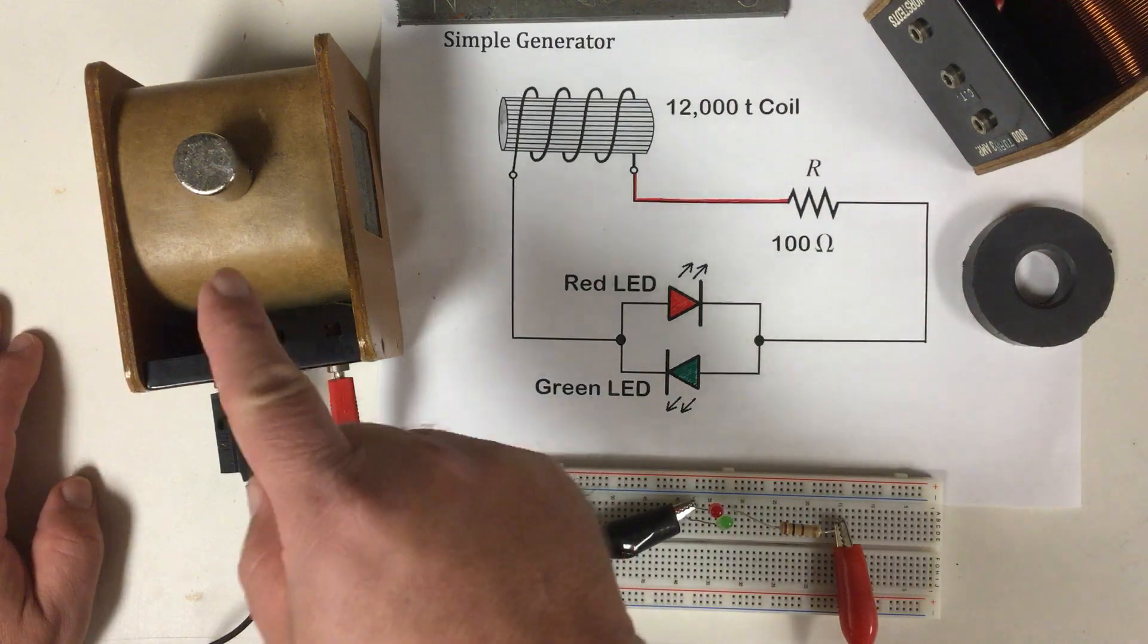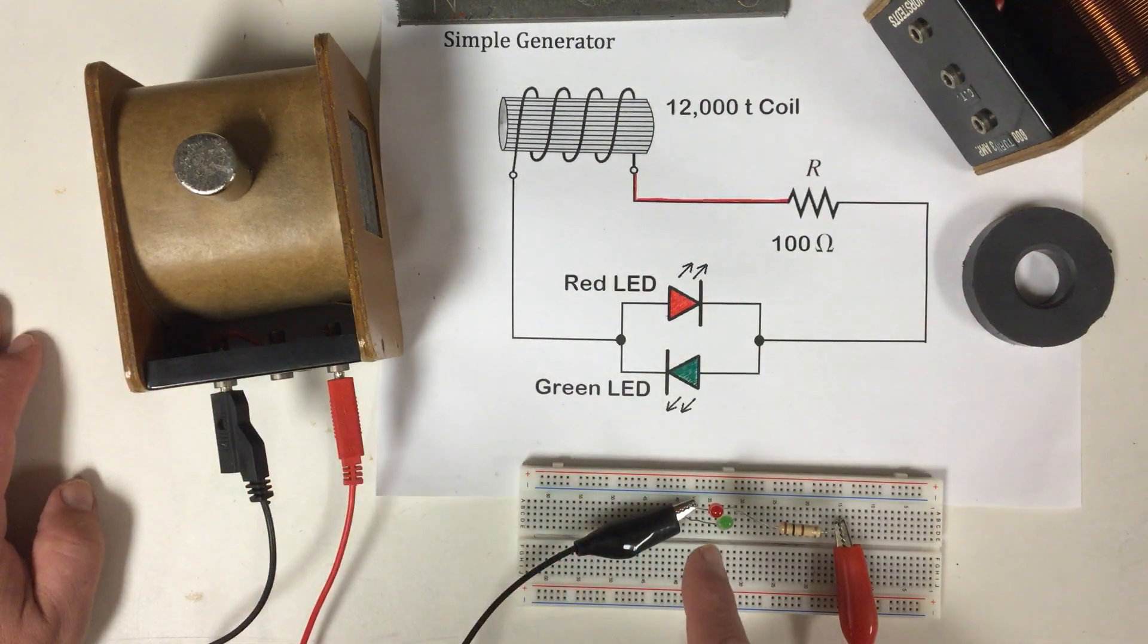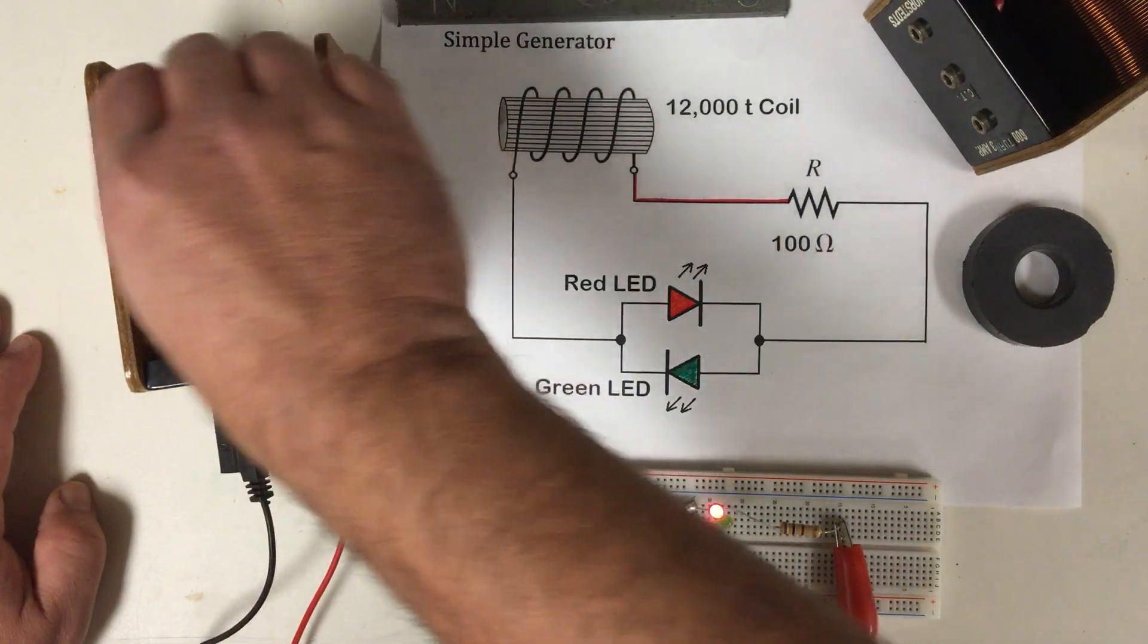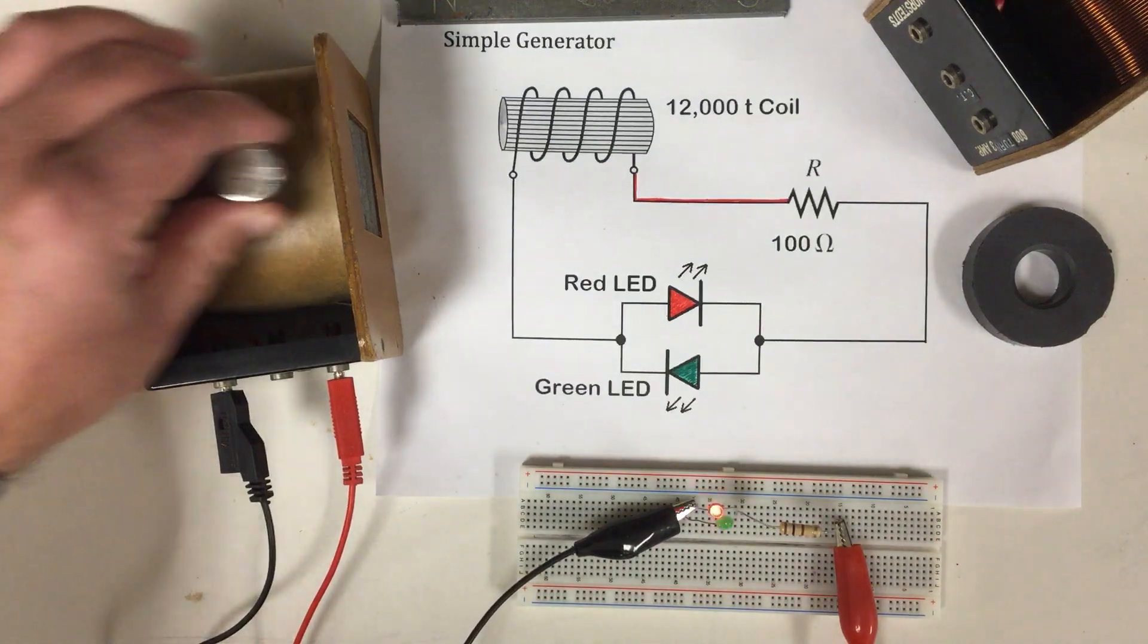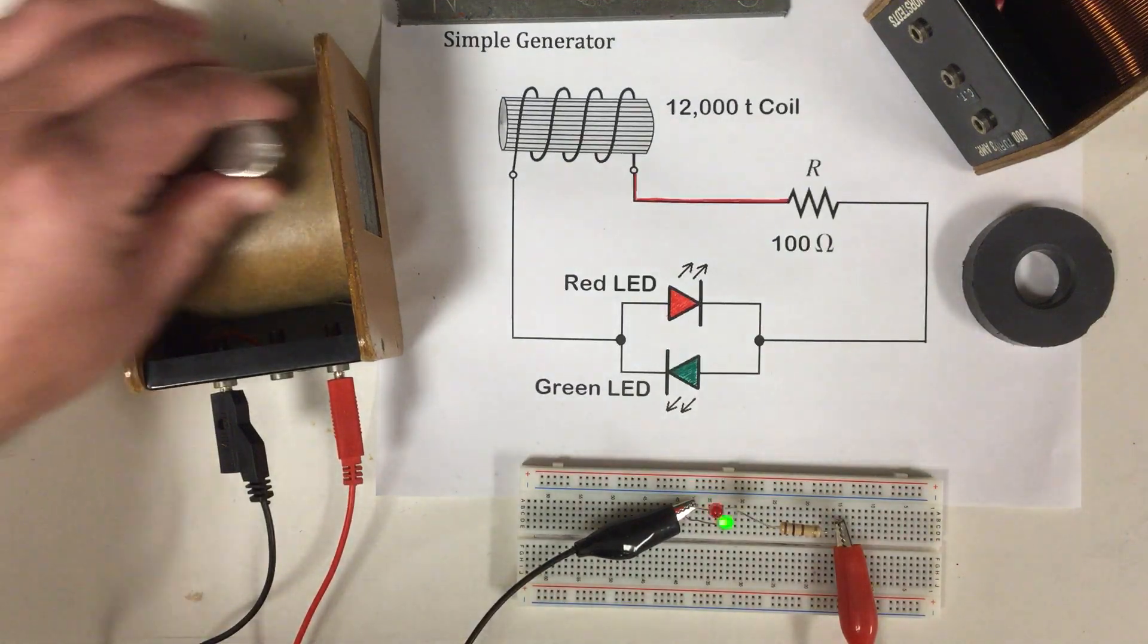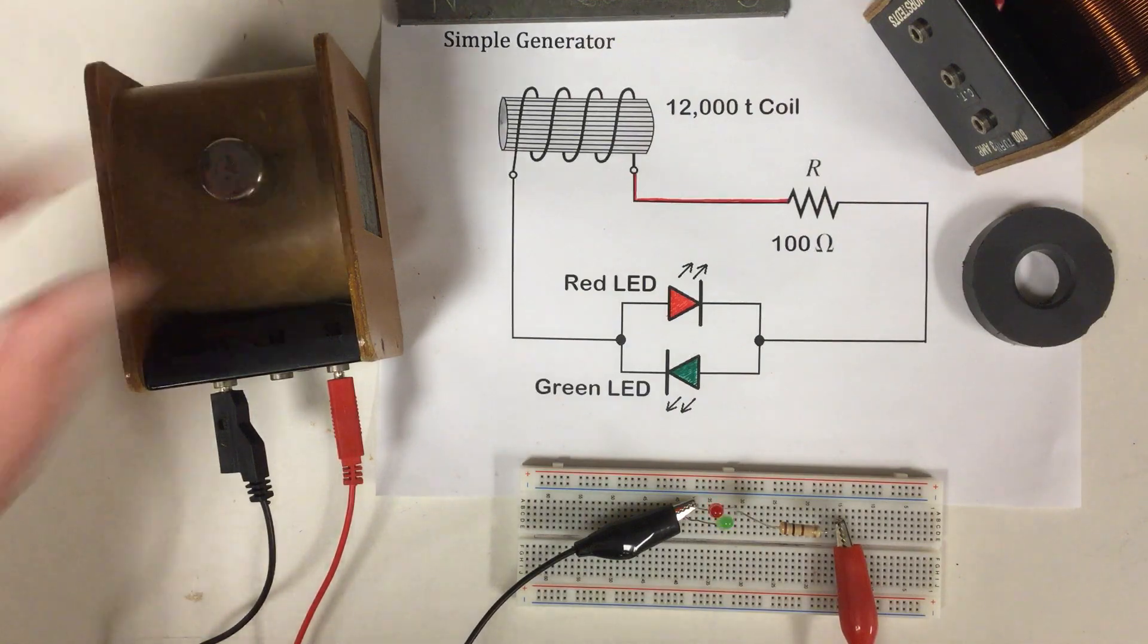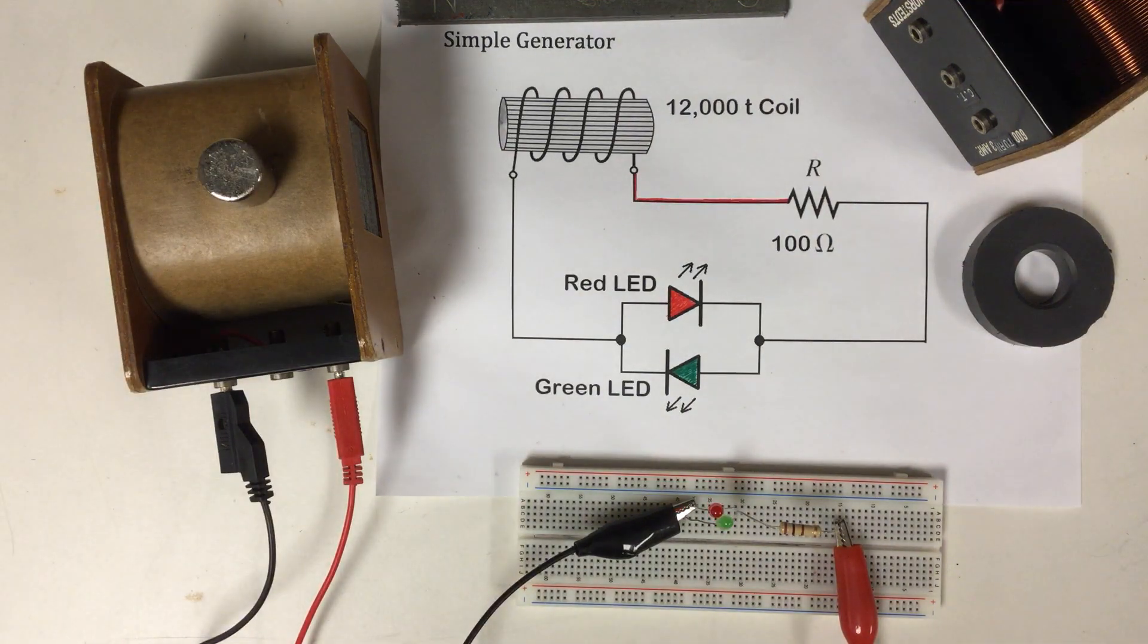You will see that when my magnet is stationary, no voltage is generated. I'm not putting any pressure on the electrons to move. It's only when I put pressure on the electrons to move that I get voltage. And that is it. That is Faraday's law of induction.